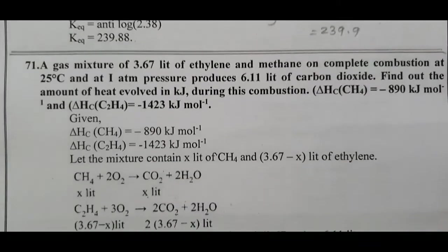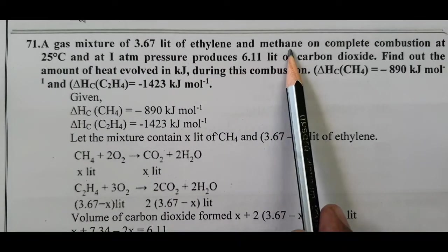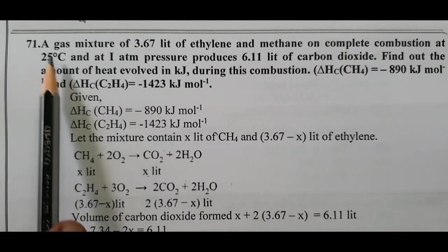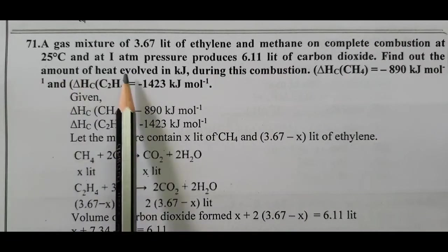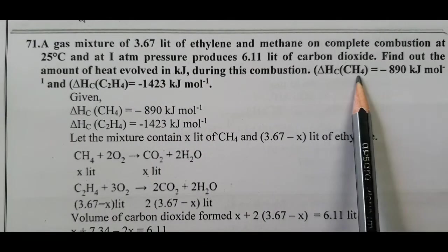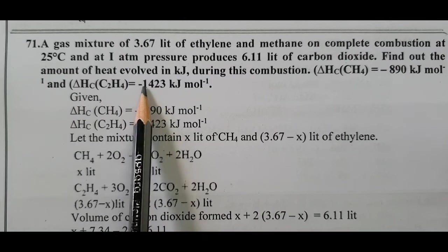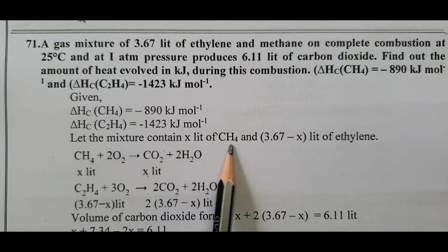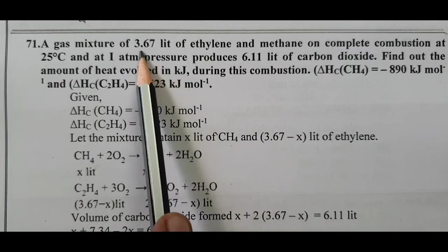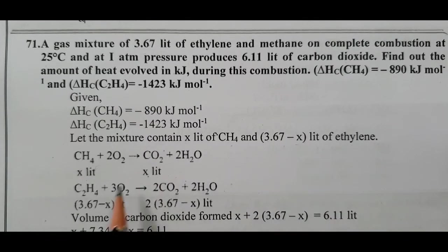Question number 71: A gas mixture of 3.67 liters of ethylene and methane on complete combustion at 25°C and 1 atm pressure produces 6.11 liters of carbon dioxide. Find out the amount of heat evolved in kilojoules during the combustion. Methane combustion ΔH° = -890 kJ mol⁻¹ and ethylene combustion ΔH° = -1423 kJ mol⁻¹. Let the mixture contain x liters of methane and (3.67 - x) liters of ethylene.